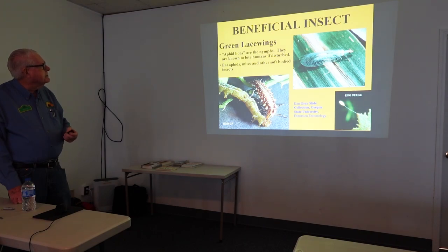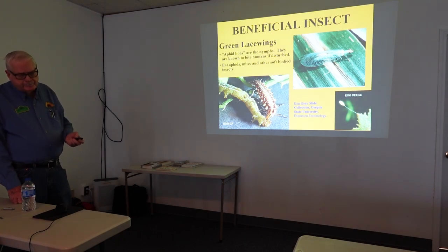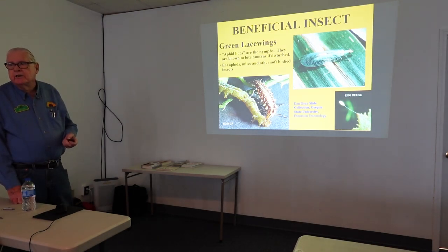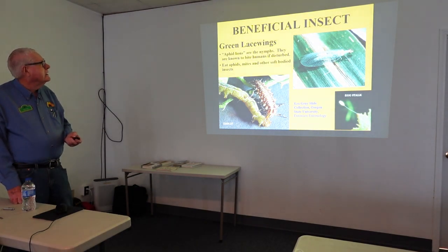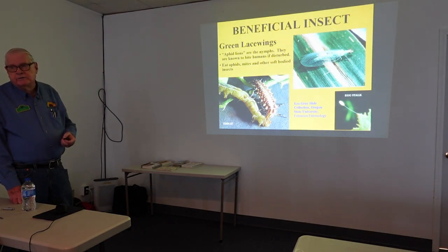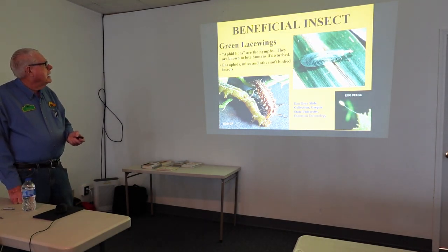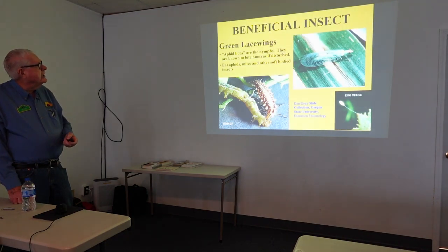Green lacewings — the nymph is called the 'aphid lion.' They are known to bite humans if disturbed. They eat aphids, mites, and other soft-bodied insects.